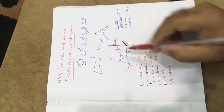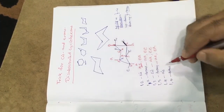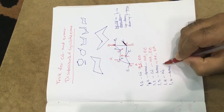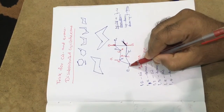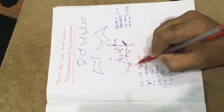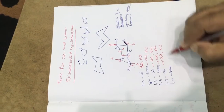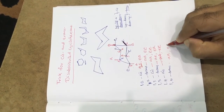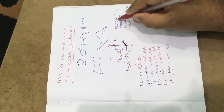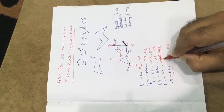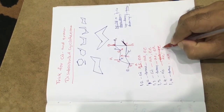For the 1,4 position: position one is up and position four is down — up and down — that is trans. So axial-axial is trans, and equatorial-equatorial is also trans in the 1,4 position. For the cis form: up-up — that is cis — so axial-equatorial and equatorial-axial are cis in the 1,4 position.